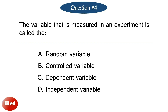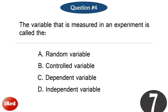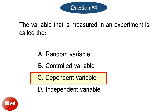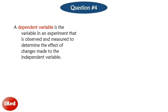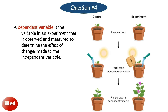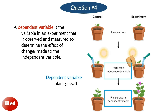Question number 4: The variable that is measured in an experiment is called the dependent variable. The correct answer is letter C. A dependent variable is the variable in an experiment that is observed and measured to determine the effect of change made to the independent variable. For example, in testing the effect of fertilizer on plant growth, the independent variable is the amount of fertilizer applied, and the dependent variable is the growth of the plants, measured by height or biomass.